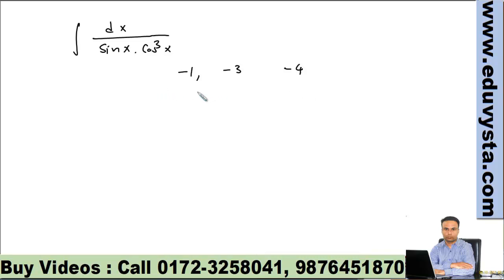When we substitute for tan x, we must have sec squared x multiplied with dx. So let's divide numerator and denominator by cos to the power 4. So we have in numerator sec to the power 4x and in denominator tan x.